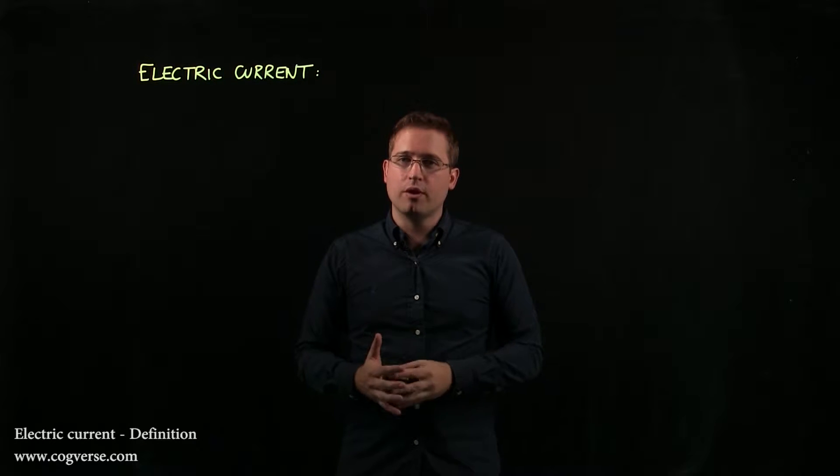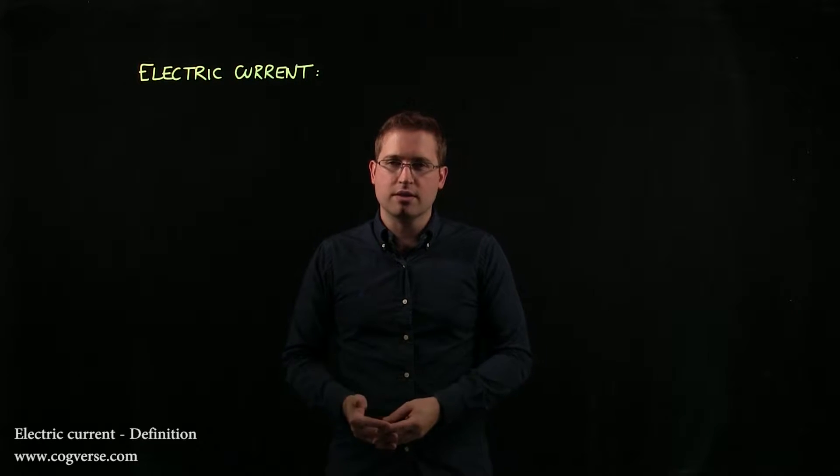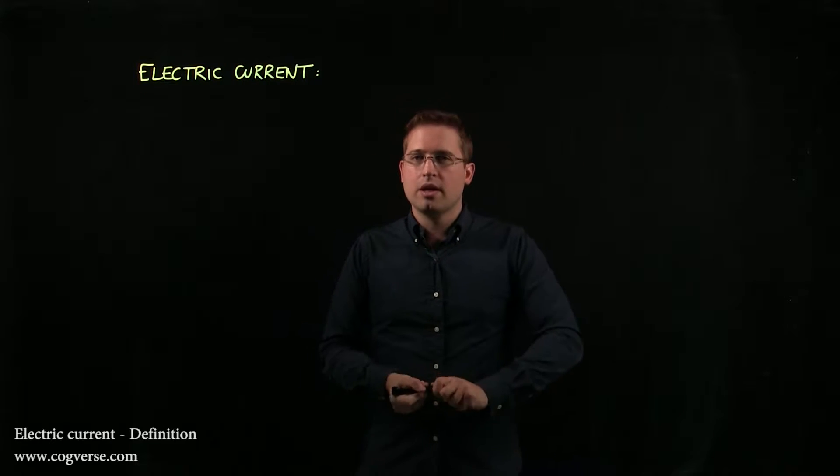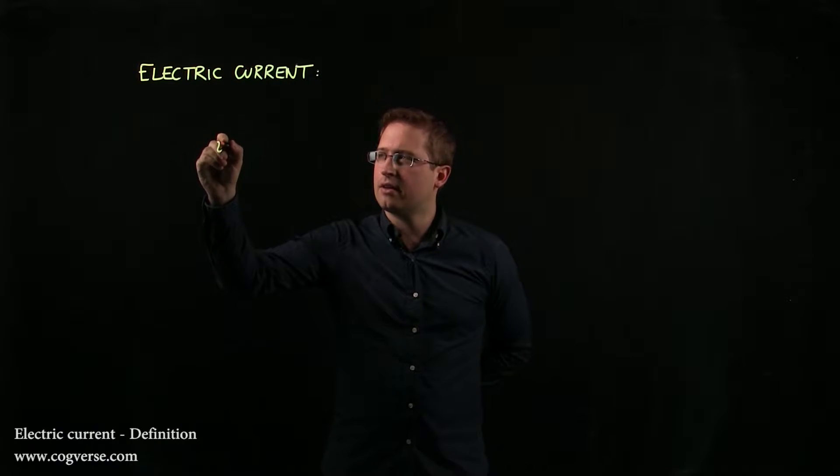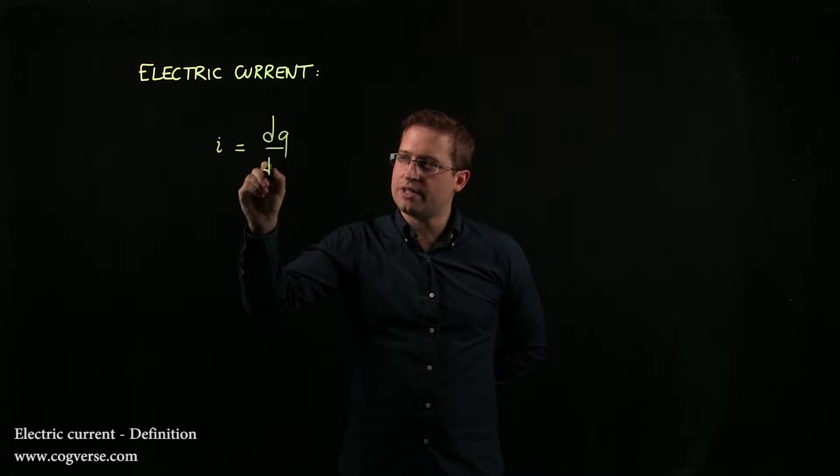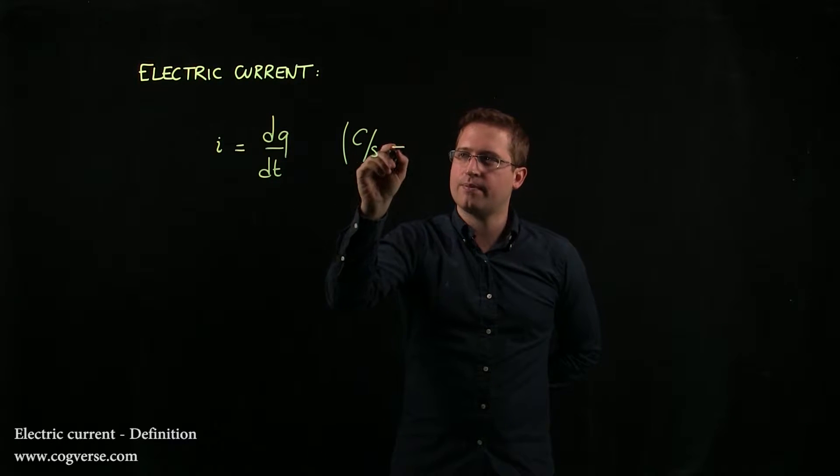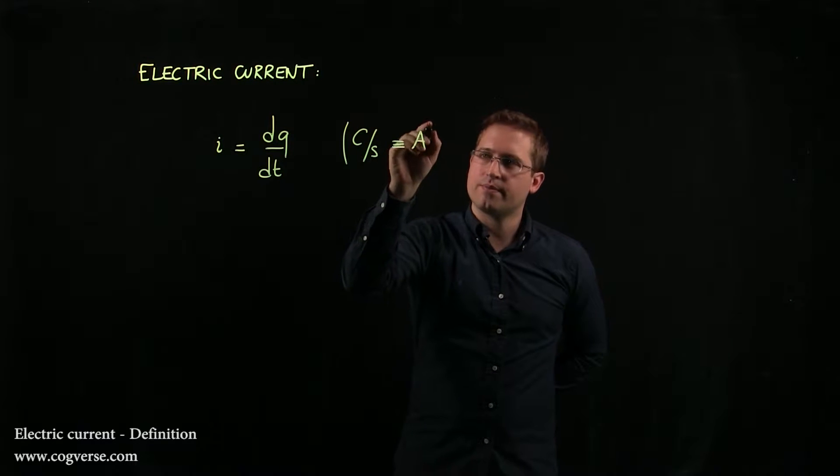Electric current is a measure of the flow of electric charge. Precisely, it tells you how much charge crosses a surface per second. It's usually denoted by little i and defined as dq over dt, which in terms of units is Coulomb per second, also known as ampere.